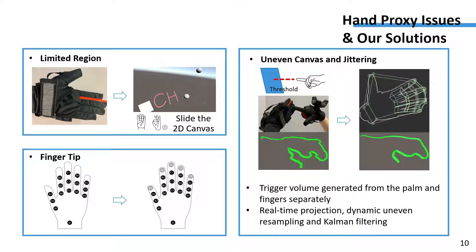What's more, our hand is not as flat as the tablet. Aimed at this issue, our trigger volume was generated from the pen part and finger parts separately.